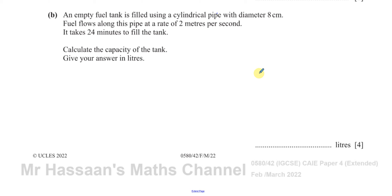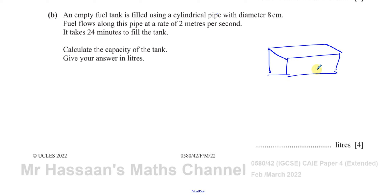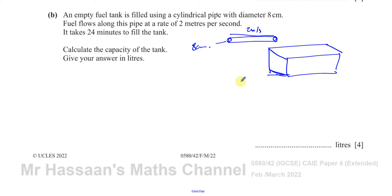For part B: an empty fuel tank is filled using a cylindrical pipe with a diameter of 8 cm. Fuel flows along this pipe at 2 meters per second, and it takes 24 minutes to fill the tank. We need to calculate the capacity of the tank in liters. The approach is to find the volume of fuel flowing per second, then multiply by the total time.